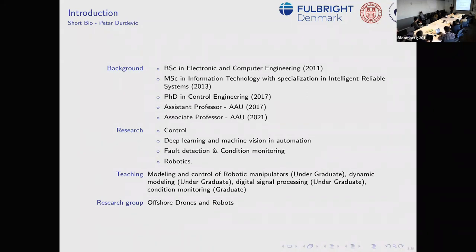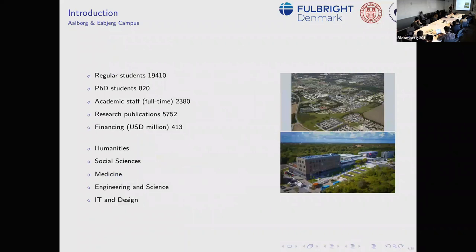Just quickly about our university: up here you see the main campus in Aalborg — I'll show you on a map — and this is our campus in Esbjerg. We have almost 20,000 students, almost a thousand PhD students, 2,400 academic staff full-time, and a yearly publication rate of around 6,000.